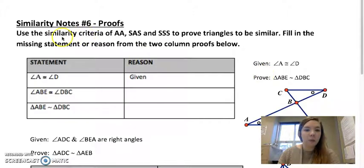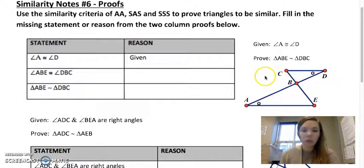So it says use the similarity criteria of angle-angle, side-angle-side, and side-side-side to prove triangles to be similar. Fill in the missing statement or reason from the two column proofs below. So they put our given A is congruent to D. And they mark that on our picture with these little circles. And then from here, we have to try to figure out the rest.